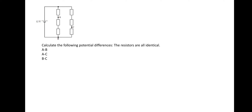Now let's look at voltage drop. This is a simplified case where the resistors are all identical. We have 12 volts total at the top line and 0 volts at the bottom. Because all resistances are the same, there's a 4-volt drop across each one.